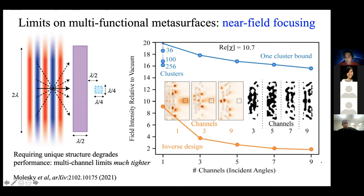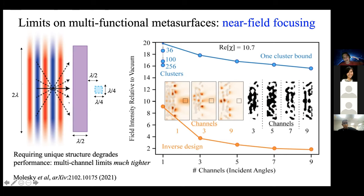Finally, another application: if you have a meta-surface that is sub-wavelength thin in one direction, with a plane wave incident, and the goal is to focus light into a sub-wavelength region a sub-wavelength distance from the structure — what happens when you try to do this for multiple angles, say separated by 15 degrees? As you increase the number of angles...